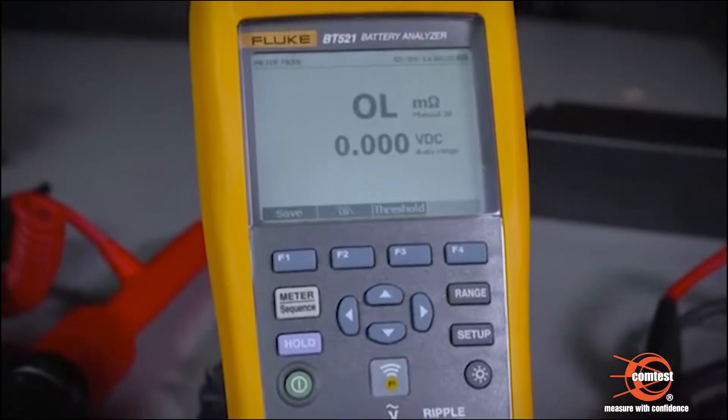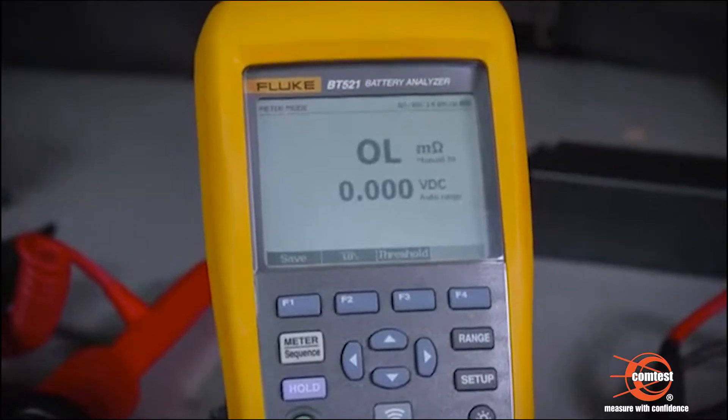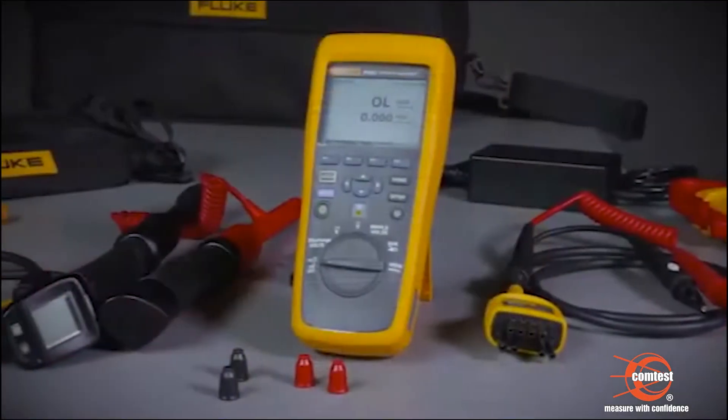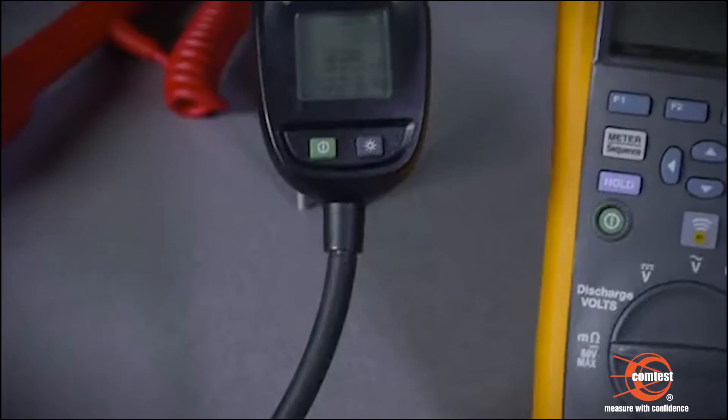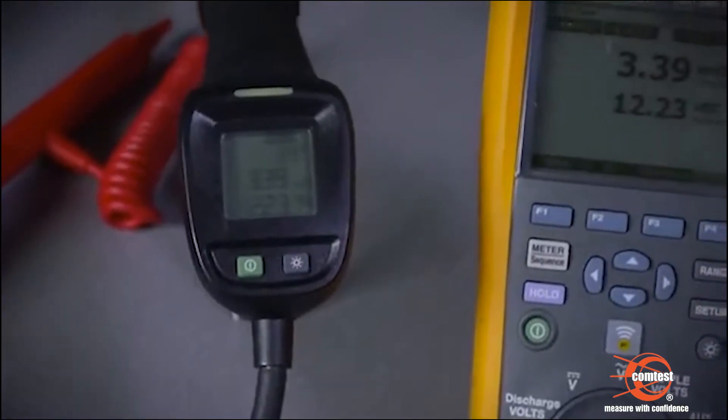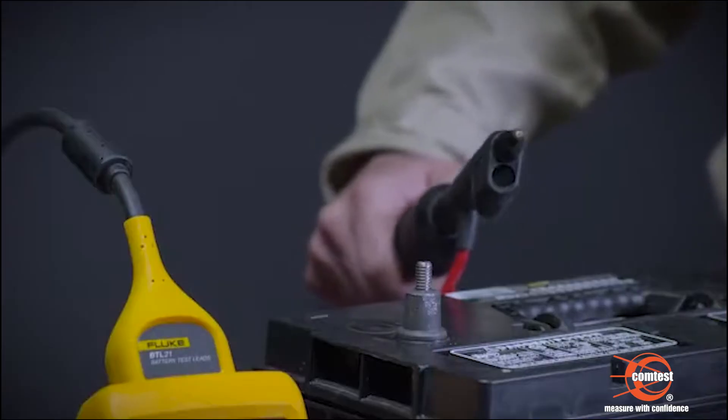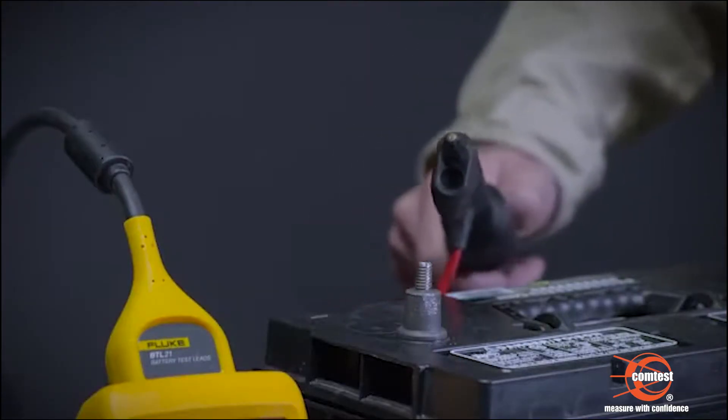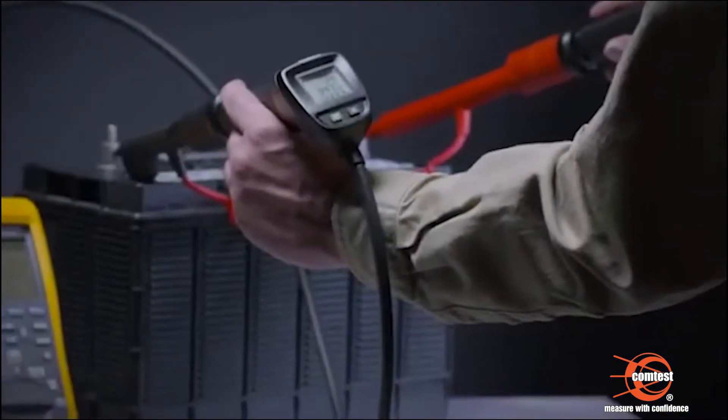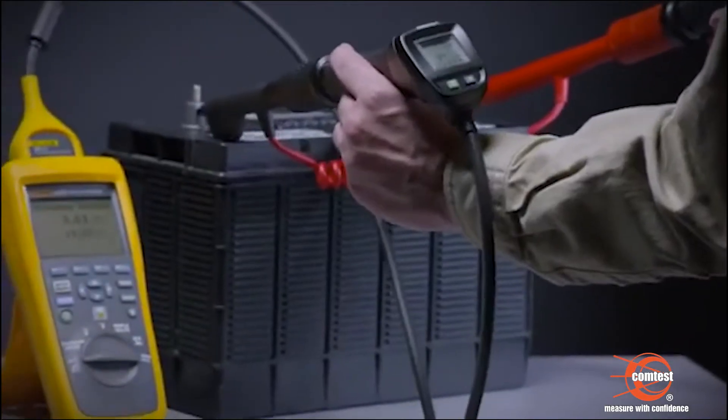The Fluke BT521 battery analyzer utilizes the unique BTL21 intelligent test probes that allow the user to simultaneously capture voltage and milliohms while measuring temperature using the integrated infrared sensor so you can get the valuable data you need from every test on every cell.